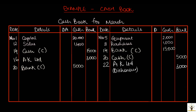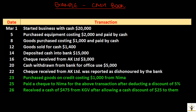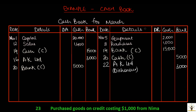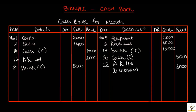Let us see some transactions that involve these cash discounts. On March 23, purchased goods on credit costing $1,000 from NEMA. As mentioned earlier, the cashbook only records cash transactions and not credit transactions. This is a credit transaction — goods were purchased on credit — so this will not be recorded in the cash book. Instead, it will be recorded in the purchase day book.